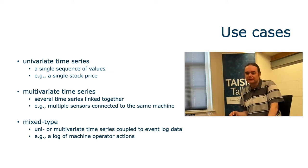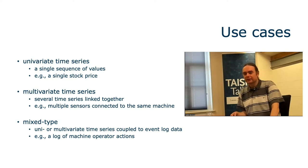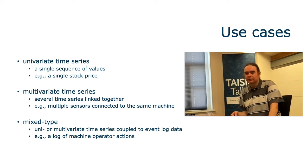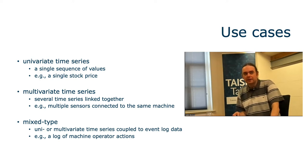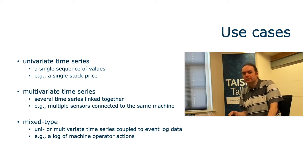Finally, the most complex type is the so-called mixed type time series, where you have univariate or multivariate time series coupled with event log data. Event log data is generically defined as a sequence of events that doesn't necessarily contain real-valued measurements, doesn't have to be numerical, and doesn't have to come at regular time intervals — adding to the complexity of the problem.